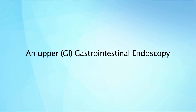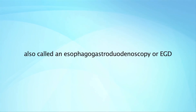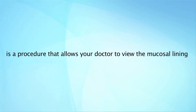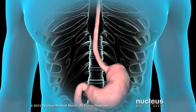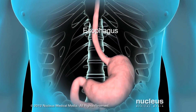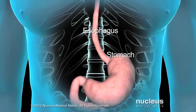An upper GI endoscopy, also called an esophagogastroduodenoscopy, or EGD, is a procedure that allows your doctor to view the mucosal lining of the upper portion of your gastrointestinal tract. This includes your esophagus, stomach, and duodenum.